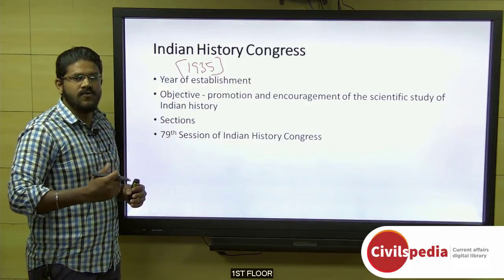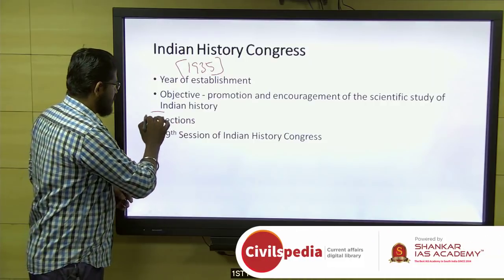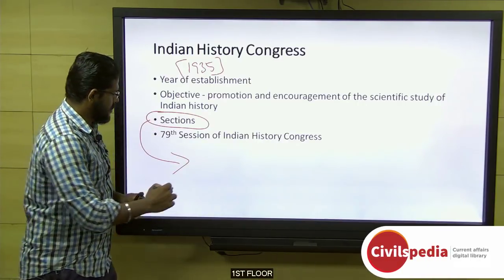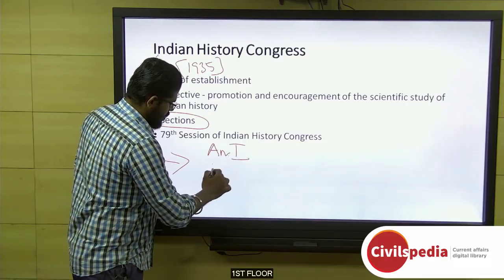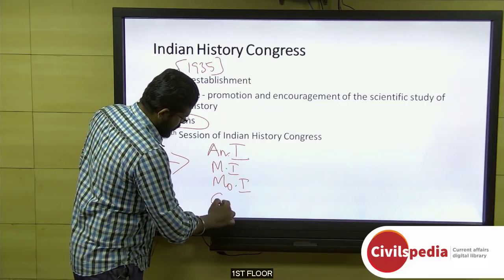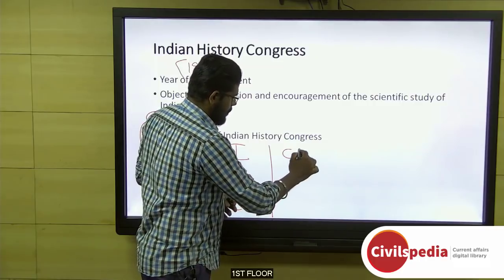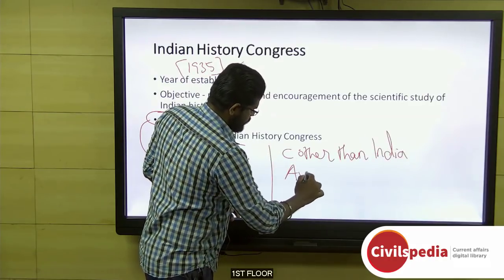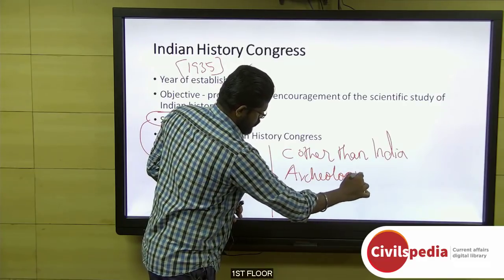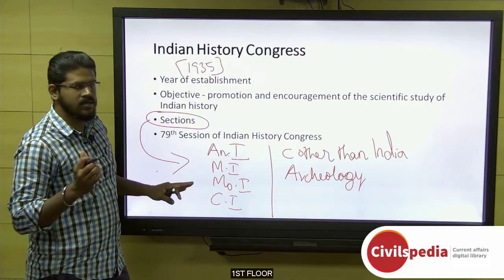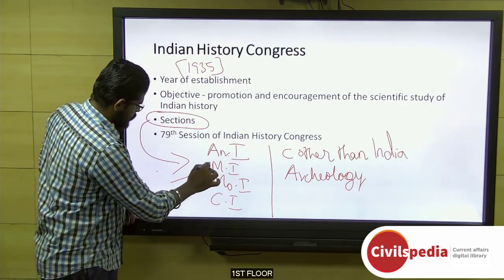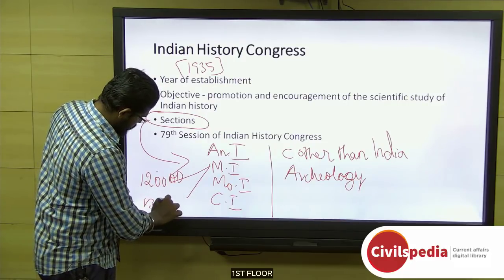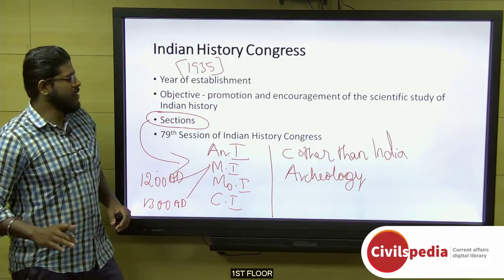The Indian History Congress also takes steps related to the protection of historical monuments and has a mandate to defend the secular nature of Indian history. Publications are classified into six sections: Ancient India, Medieval India, Modern India, Contemporary India, Countries other than India, and Archaeology. In this classification, Medieval India starts from 1200 AD for Northern India and 1300 AD for Southern India.